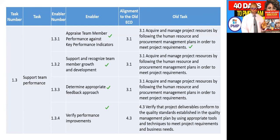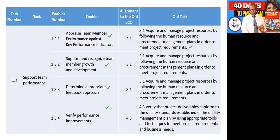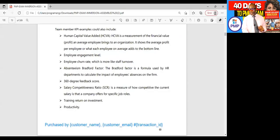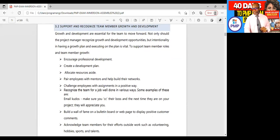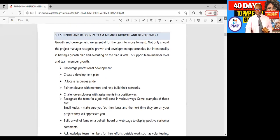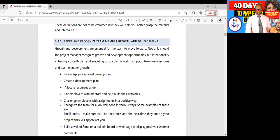Next we're going to very quickly read through another page in the book to drum this home a little bit more. I'm going to go to 3.2 and we are going to read just a little bit of 3.2 on support and recognize team member growth and development. Hopefully this will clarify some ideas about how you can support and recognize team member growth and development.